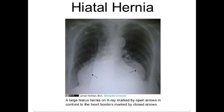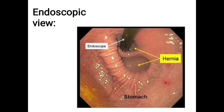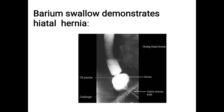Here is the X-ray picture of hiatal hernia — you can see the large hernia marked by open arrows in contrast to the heart borders marked by closed arrows. Next is the endoscopic view showing the endoscope, the hernia, and the stomach in a clear picture. Finally, the barium swallow X-ray shows the GE junction, hernia, and diaphragm very clearly.